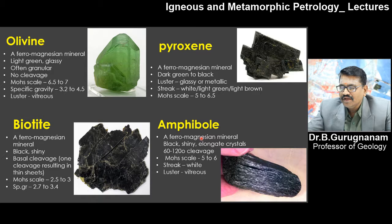Amphibole is also a ferromagnesian mineral, black and shiny in nature. It has an elongated crystal structure with 60 to 120 degree cleavage. Mohs scale of hardness is 5 to 6 and the streak is white.